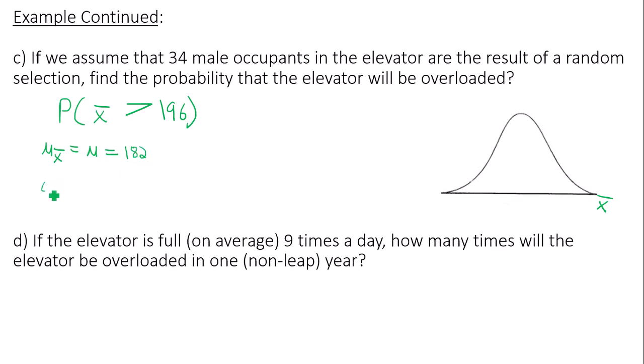What's different, however, is the standard deviation of the sampling means. The standard deviation of the sampling means is the original standard deviation divided by the square root of n, also known as the finite population correction factor. Now, my original standard deviation was 26, and n, my sample size, is 34.